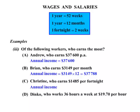Now the annual income for Christine. She's getting $1,485 per fortnight. We know there are 52 weeks in a year, and 52 divided by 2 gives us 26 — so there are 26 fortnights in a year. That's also very useful to know. So we multiply 1,485 by 26 and get $38,610.